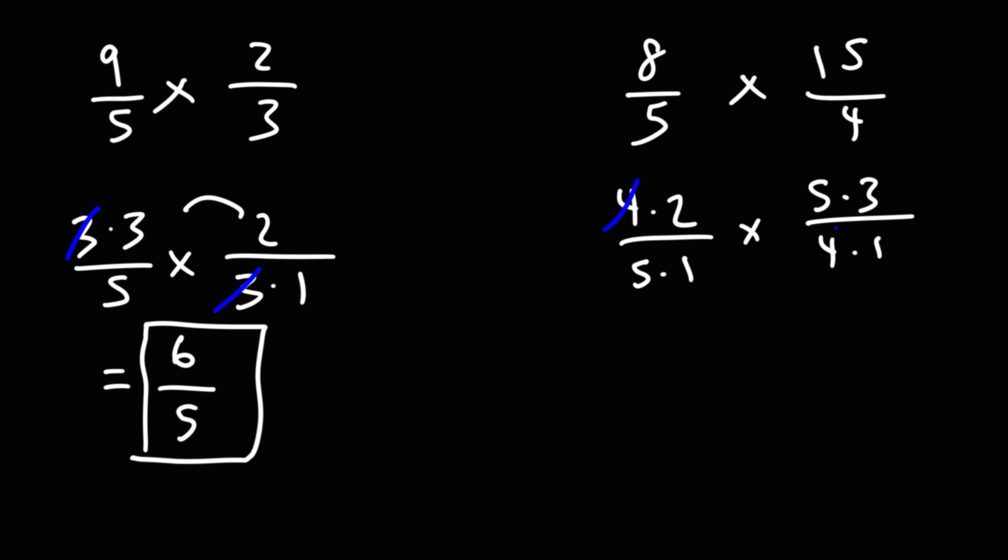So we could cancel a 4, and we could cancel a 5. So on top, I have 2 times 3, which is 6, and on the bottom, 1 times 1, which is 1. 6 divided by 1 is 6. So that's going to be the answer.